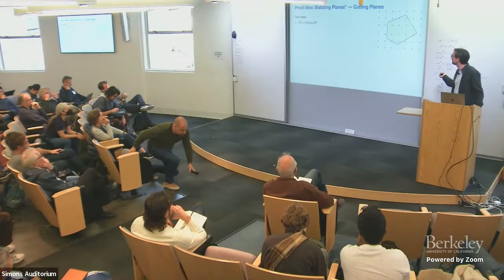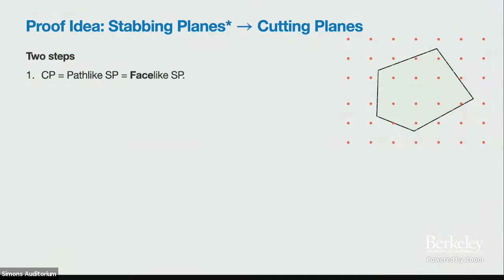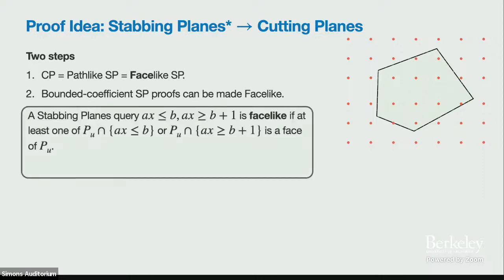I'll sketch the proof. A stabbing planes query is face-like if at least one of the two resulting polytopes is a face of the polytope you started with. A face is one of the sides — you lose a dimension. A path-like query shaves off a side polytope and the proof is one long path. A face-like query requires that one side is a face, meaning there may be points exactly along the surviving half-space.